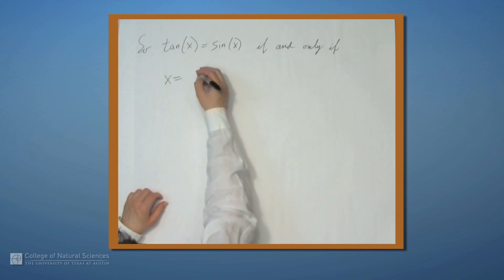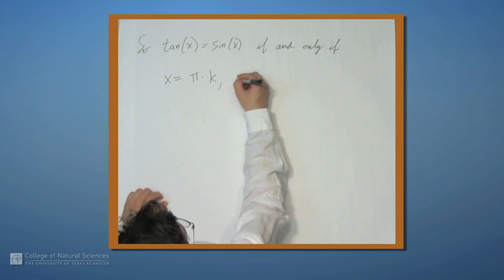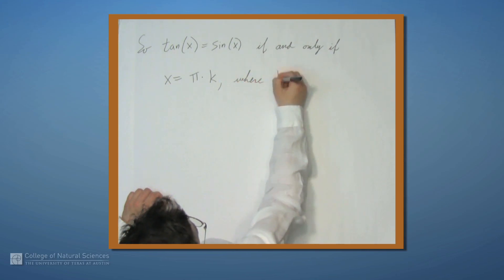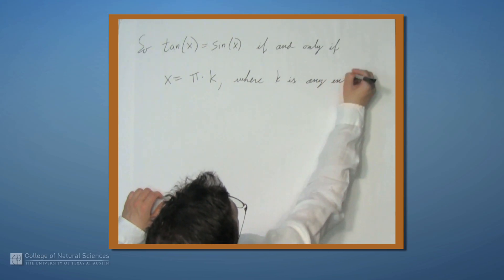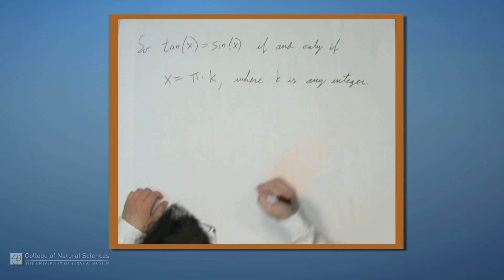In other words, x is any integer multiple of pi. So x is pi times k, where k is any integer.